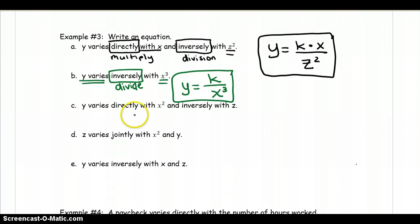Let's try this one. y equals directly. So we're talking about k times x squared, but inversely with z. So divided by z. Once again, pay attention to the minor detail of one k in each of these equations.